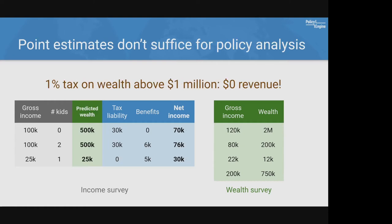One approach is to predict wealth as a point estimate — for example, running a linear regression so that with 100K income you predict 500K wealth. The problem is you're not capturing the tails of the distribution. In the raw data you might have a household with 2 million in wealth that would trigger the tax, but after this simple approach no one in the income survey is subject to the wealth tax.